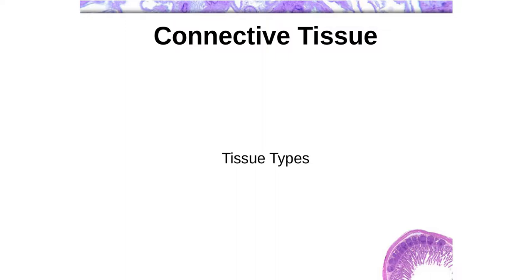Hi again, everyone. In this video, we're going to take a quick look at some of the basic connective tissue types. We've looked at the cells, we've looked at the matrix. Let's take a look at how they're actually arranged.